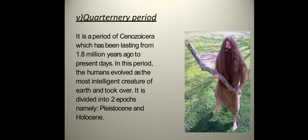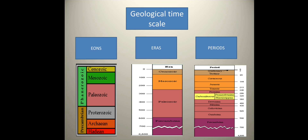The Quaternary period is a period of the Cenozoic era which has been lasting from 1.8 million years ago to present days. In this period, humans evolved as the most intelligent creature on Earth. It is divided into two epochs: the Pleistocene and Holocene. These are all the eons, eras, and periods of the geologic time scale.